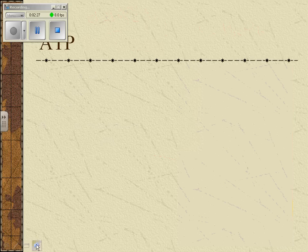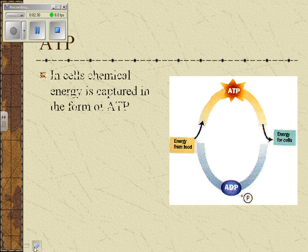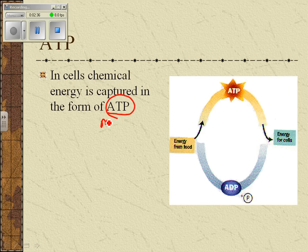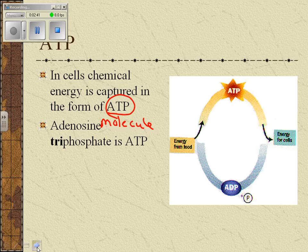So what organisms do is the chemical energy is captured in the form of something called ATP. ATP is a molecule — it's the molecule of energy in cells. It's called adenosine triphosphate. Essentially, you eat food and your cells create ATP, and we're going to talk about that creation in this lecture.